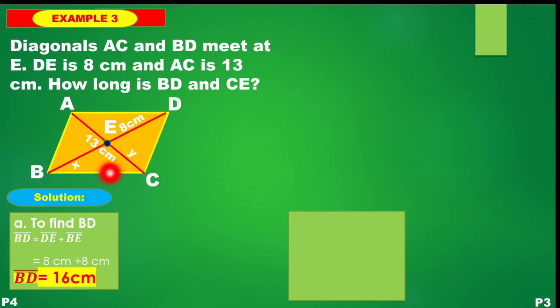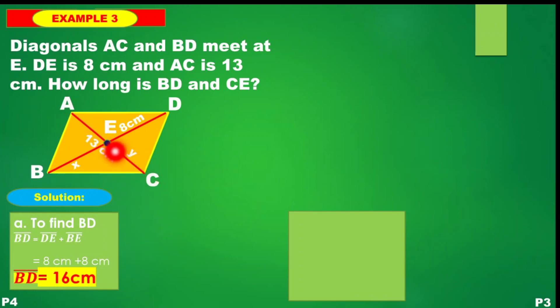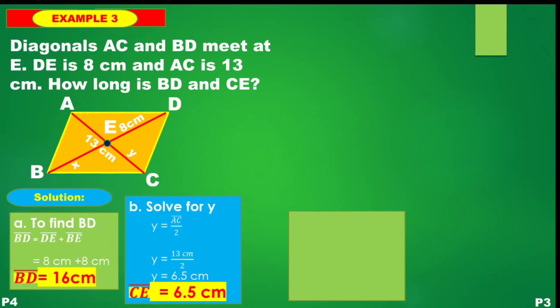That is the length of our diagonal. Now for segment CE — the second diagonal. The total length of diagonal AC is 13 cm. Since the diagonals bisect each other, we just divide by 2.